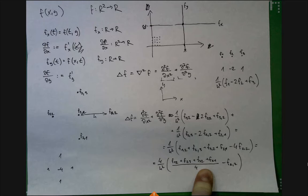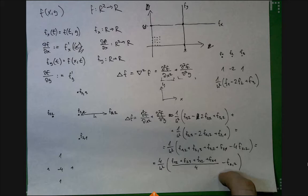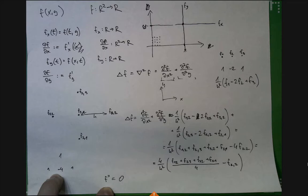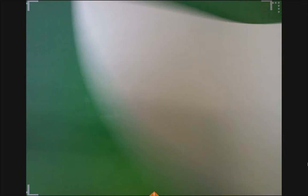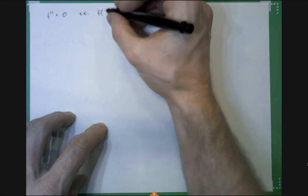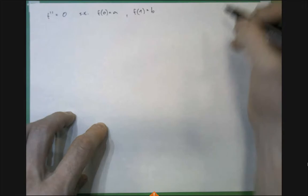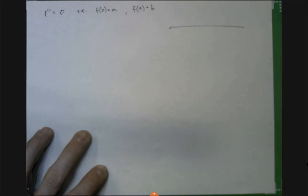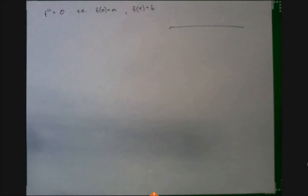Here's something interesting that only happens in 2D. In 1D, if the second derivative equals zero, the function must be a straight line. In 2D, however, the Laplacian being zero doesn't mean the function is flat, because the second partial with respect to x can compensate the second partial with respect to y.